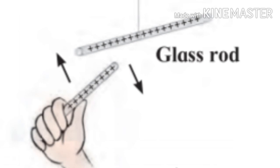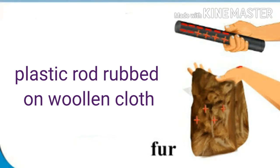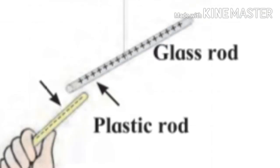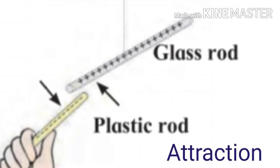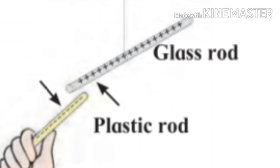Now we'll see another activity. Take a plastic rod and rub one of its ends against a woolen cloth, then bring that rod near the suspended glass rod. We will observe that the two rods are pulled towards each other due to attraction. The suspended glass rod has positive charge and the plastic rod has negative charge.